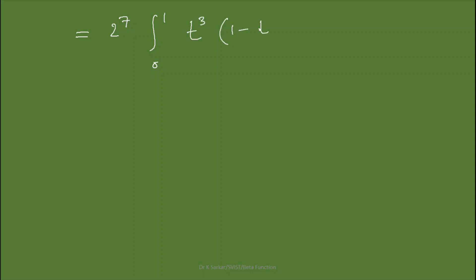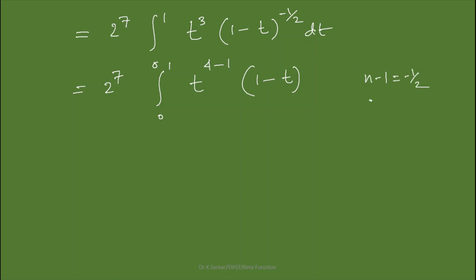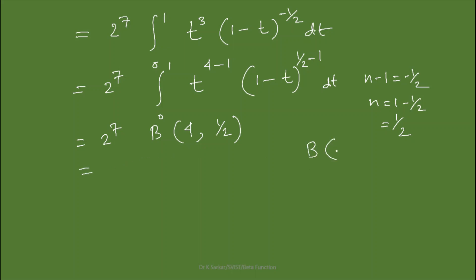So we have 2⁷ times the integration from 0 to 1 of t³·(1 minus t)^(−1/2) dt. Now if we write this in the form of the Beta function, we identify t^(4−1) and (1 minus t)^(n−1), where n minus 1 equals negative one-half, so n equals one-half. Therefore this equals 2⁷ · Beta(4, 1/2).